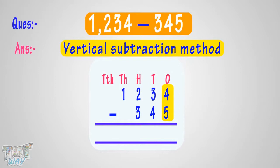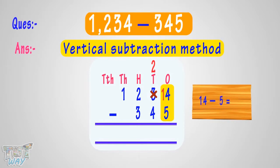So what do we do here? 4 will borrow 1 from the digit at 10's place. Cross 3, make it 2, and give 1 to 4 — and it becomes 14. 14 minus 5 equals 9. Write 9 in the difference at 1's place.